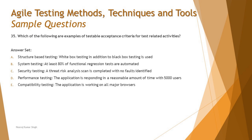Option B says system testing, with the criteria that at least 80% of functional regression tests are automated. There's a specific number there — 80% — so if you have 100 test cases, at least 80 of them should be automated. This is very precise and clear for anyone to achieve, and it can be tested.